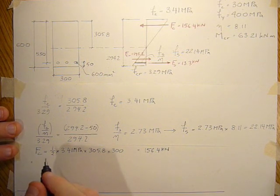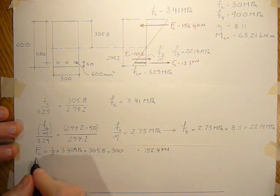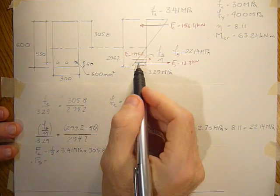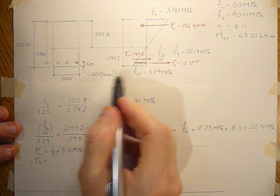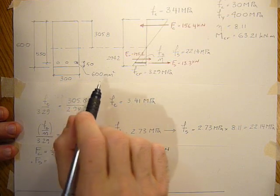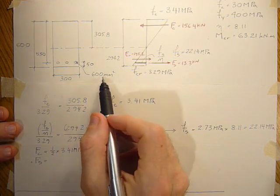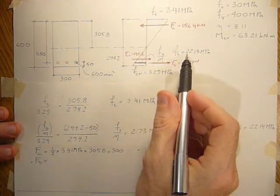And then the force in the steel would be the area of the steel, the actual area of the steel, not the transformed area of the steel because you want to use the real steel area and the real steel stresses.